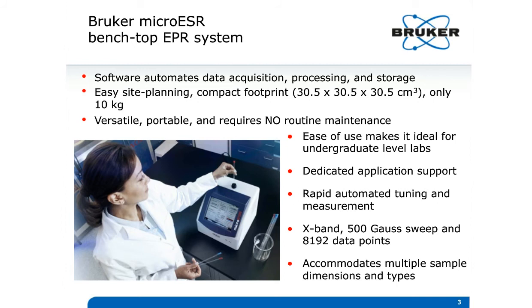The software automates data acquisition, data processing, and storage, and there's rapid automated tuning and measurement. The instrument is capable of up to about a 500-gauss sweep of the X-band region and can collect over 8,000 data points. The micro-SR accommodates multiple sample dimensions and types.